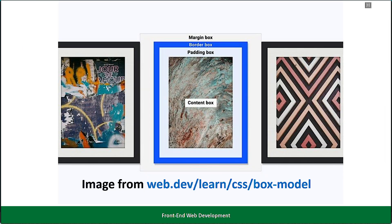When determining the final width of your layout, you need to account for several components. Before we go into the formula, here is the analogy of the CSS box model: we have the content with a specific width and height, we have the padding, and this is like a picture frame — the border box is the frame, the padding is like a piece of paper behind the picture, and the margin is the distance between each frame.